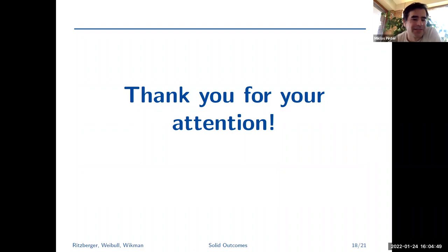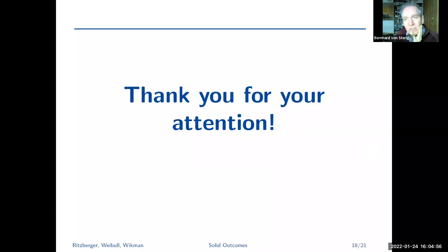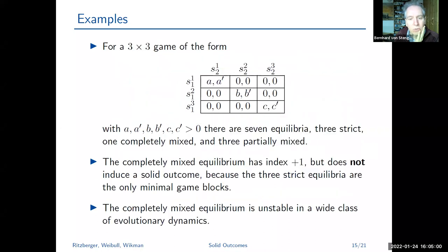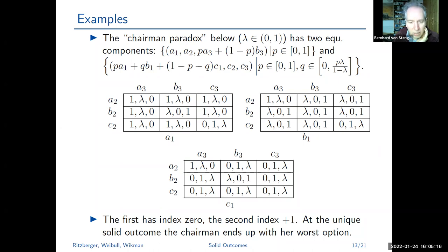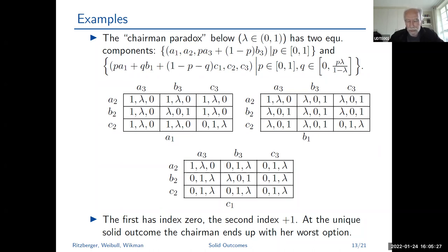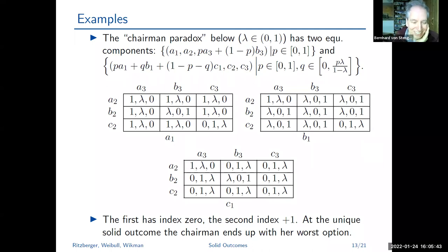A question about the chairman paradox: is the zero-index component also solid? Klaus clarifies: no, there is a unique solid outcome — the one where the chairman gets the worst alternative. The index zero component is intuitively linked to the chairman's tie-breaking power, which the other players foresee and use against the chairman. The paradox prevails.